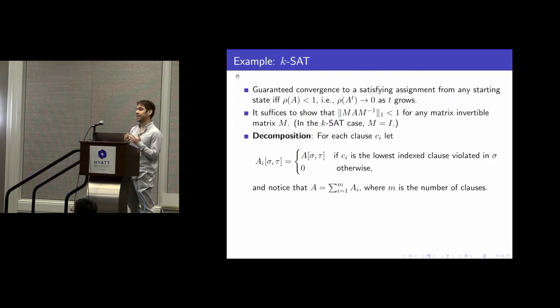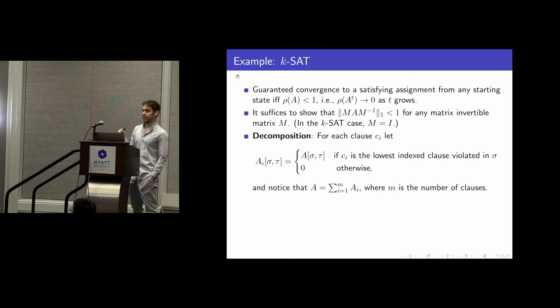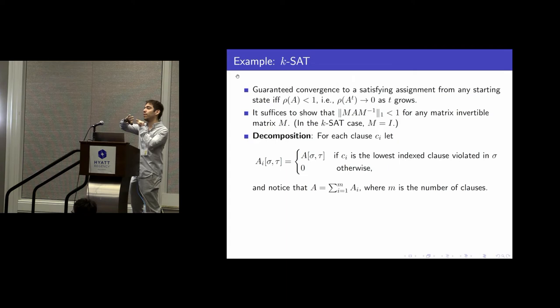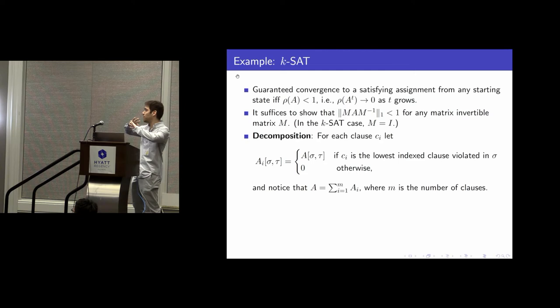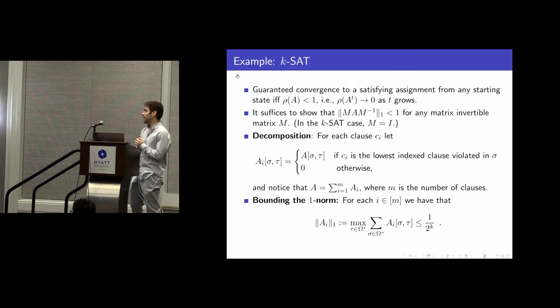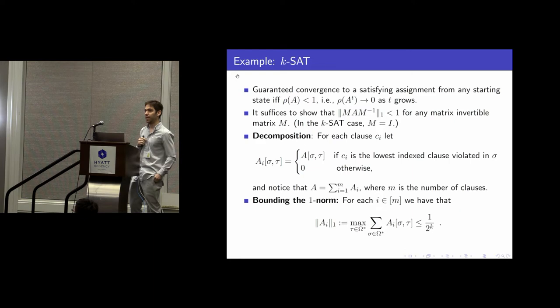The second step is to do a row decomposition of A into a sum of matrices — one matrix AI for each clause CI. This is a row decomposition in the sense that matrix AI only retains the rows for which CI is the lowest-index violated clause in the current state. So for each matrix AI, we retain only the rows for which the algorithm will actually pick that clause to resample. Clearly the sum of matrices AI sums correctly.